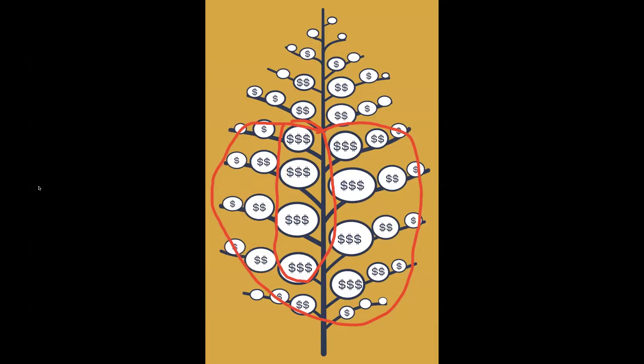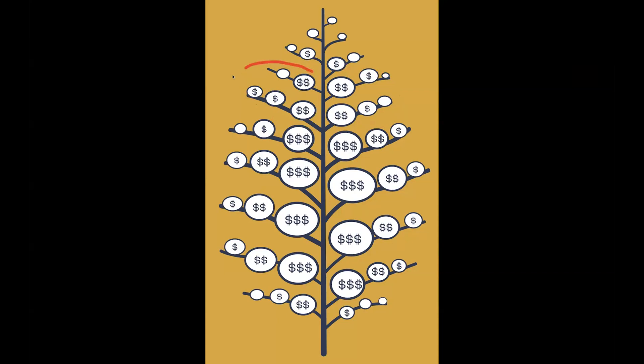As we move up in the crop, this is considered the top crop branches 12 through 16. Square retention here can be a little more challenging due to competition of developing bowls below it and increased insect pressure.